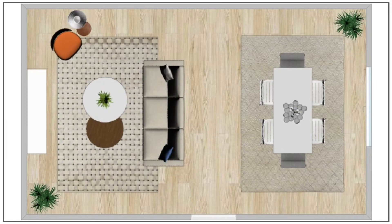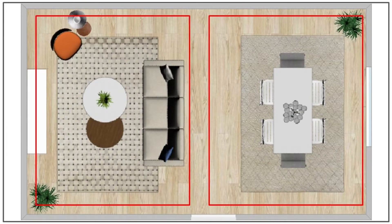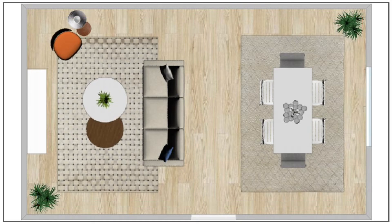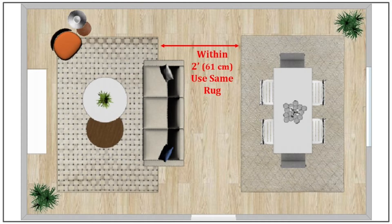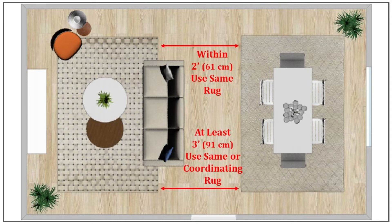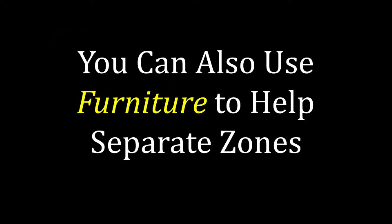Now let's discuss how to most effectively use furnishings to delineate your zones. By far, one of the most effective items is a rug. Not only do rugs feel great underfoot and add color and pattern to a room, but they are also one of the easiest ways to define a space within an open floor plan. If your rugs are going to be within two feet or 61 centimeters of each other, use the same rug. If there is at least three feet or 91 centimeters between rugs, either the same or coordinating rugs will work. Make sure main furniture pieces sit partially or completely on the rug within each zone.